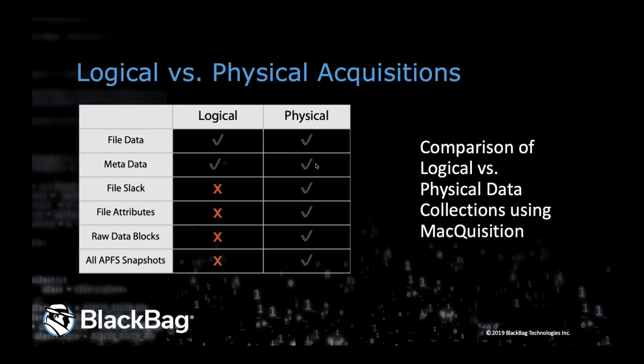It's worth thinking about what's available once you've gone through your logical options, and what the benefit of a physical acquisition is compared to logical. There are a number of potentially significant items you will not get with a logical acquisition: you won't get file slack, you will not get some file attributes, you will not get raw data blocks, and most importantly, you will not get all of the APFS snapshots. A logical acquisition will not get you all APFS snapshots, and you could be missing many hundreds, if not thousands, of files if you rely on logical acquisition alone.